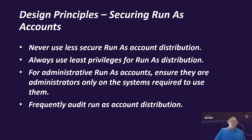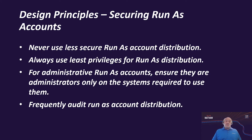I would frequently audit run as account distribution, because this is something I've observed in environments. We set things up the way they should be, and then you come back a month later and it's been changed — somebody was probably troubleshooting it or didn't know what they were doing. With SCOM 2019, at least with UR2 and UR3, we have audit capabilities built into SCOM so we can start tracking some of this. The point is we really want to keep an eye on run as account distribution and make sure accounts have not been distributed in a way that is harmful to the environment.